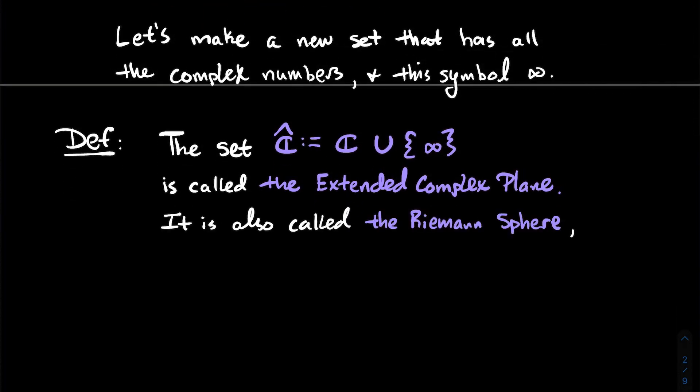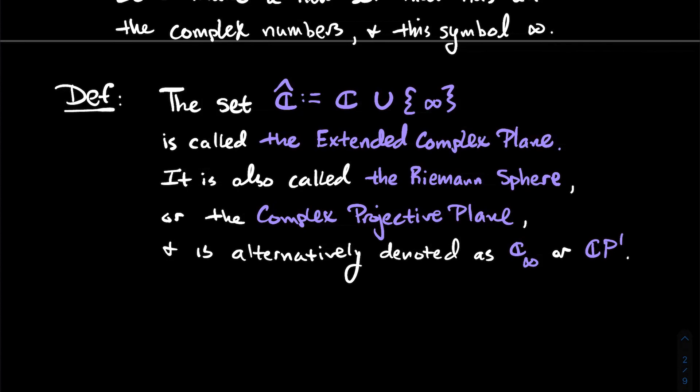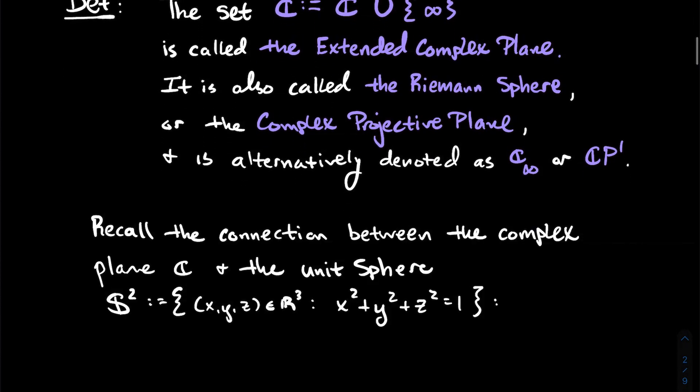As mentioned in the title, it's also called the Riemann sphere — we'll talk about why in this video. Sometimes it's called the complex projective plane as well, with notations C sub-infinity and CP1.